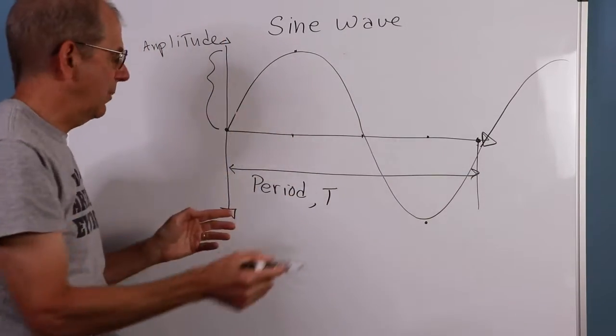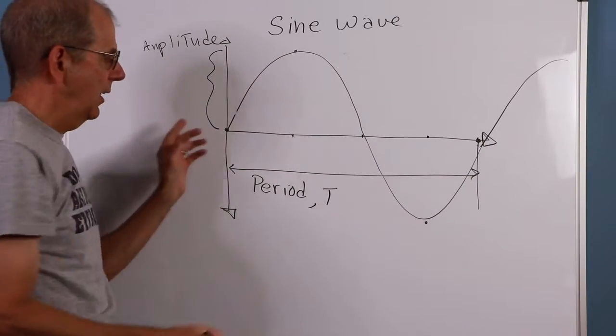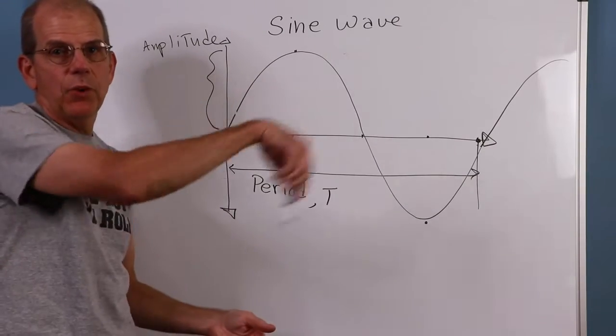And as we'll see, this will correlate to things like how loud a sound is. The bigger it is this way, the louder it's going to be. All other factors being equal. This we refer to as the period. And we give that the letter T for time. How quickly does it go? Now in the case of the second hand, the period is one minute. It takes one minute for it to go around.